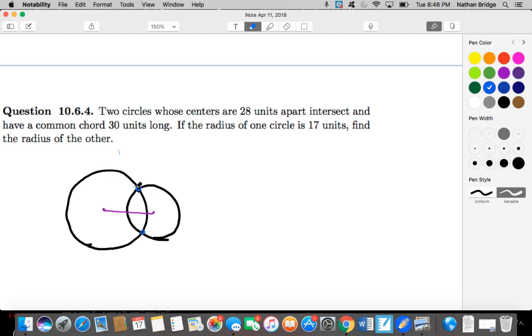In other words, they must intersect at two places, because if they intersect at two places, then you can draw a chord between those two points on the circumference of each of the circles, and they share that chord. Now that's 30 units long. So if the radius of one of the circles is 17, find the radius of the other.